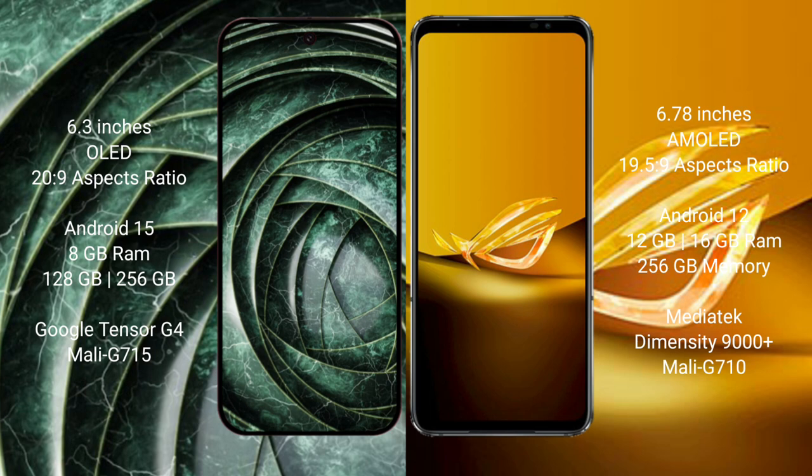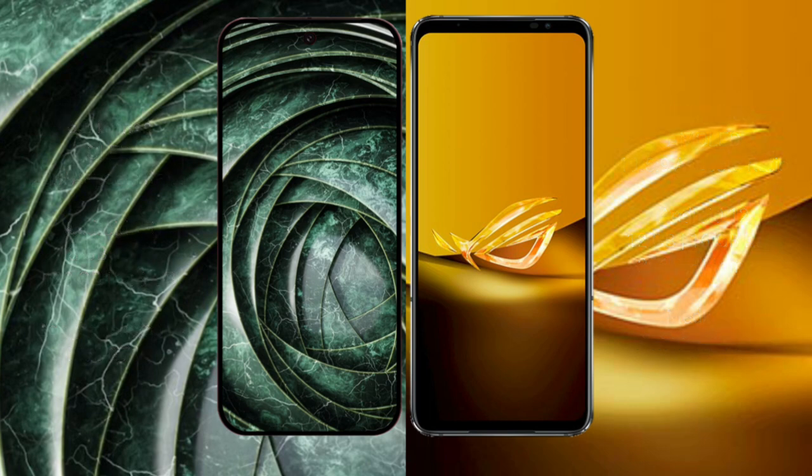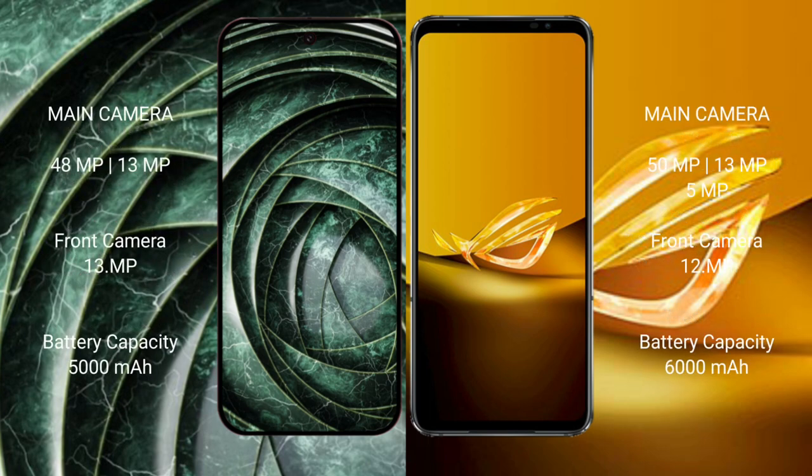ASUS ROG Phone 6D comes with 12GB or 16GB RAM and 256GB internal storage, powered by the MediaTek Dimensity 9000 Plus processor with Mali GPU. Google Pixel 9a also features a dual camera setup with a 49-megapixel plus 13-megapixel rear camera.